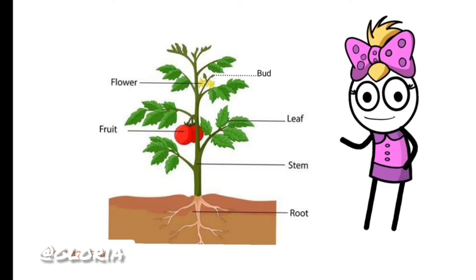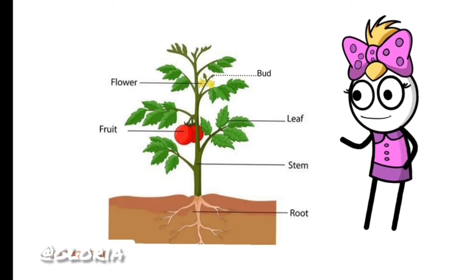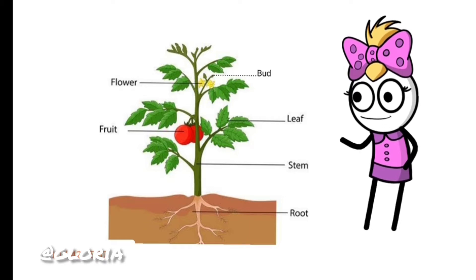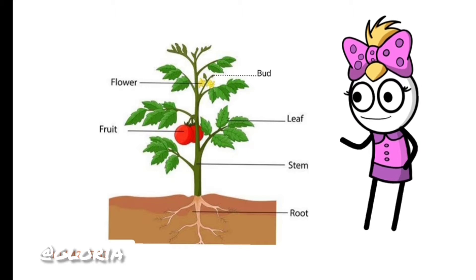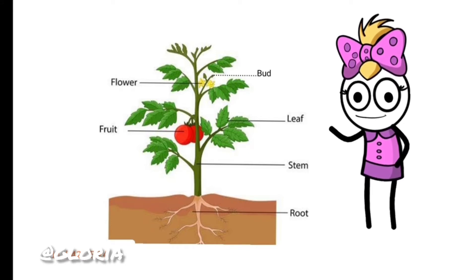Look at the shoot of our tomato plant. What things can we see on the shoot? We can see a stem, many leaves, two buds, flowers, and two fruits. So we can say that a shoot has a stem, leaves, buds, flowers, and fruits.